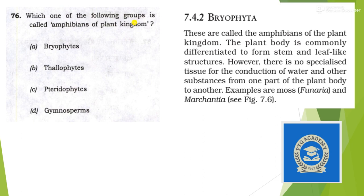Next: which one of the following groups is called amphibians of the plant kingdom? Very simple question — the answer is given in the first line of the paragraph. Bryophyta are called amphibians of the plant kingdom. So the answer is option A.